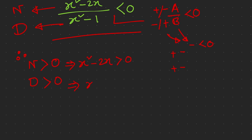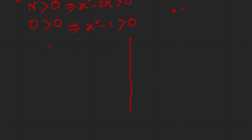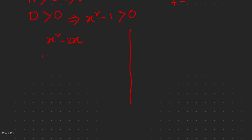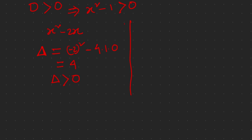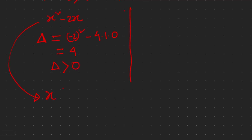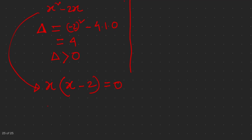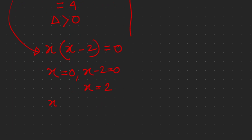For x squared minus 2x, let's find the discriminant — I'll use delta since we already have D for denominator. Delta equals b squared minus 4ac. Here b is negative 2 and c is 0, so delta equals 4, which is greater than zero. Since c is 0, finding roots is easy: factor out x to get x(x minus 2) equals 0, giving x₁ equals 0 and x₂ equals 2.